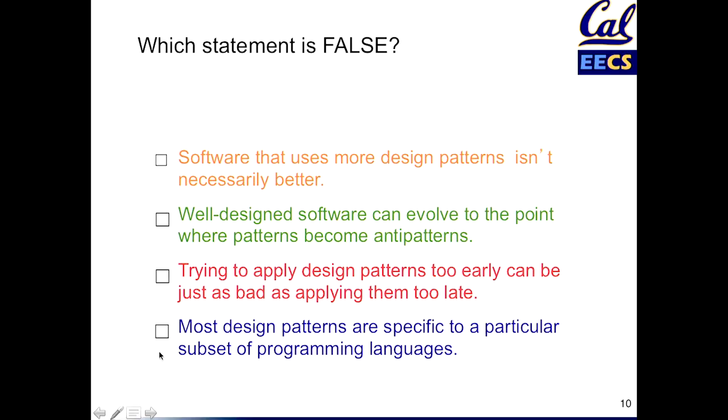So early generality is generally not good. And that leaves us with number four: most design patterns actually are not specific to a particular language. There are a few that are specific to certain language mechanisms, but by and large, design patterns talk about structure, and the kinds of things they capture are essentially language-independent. In fact, during most of these lectures about design patterns, we're not going to see a huge amount of code, but we'll see a lot of boxes and arrows. When you see boxes and arrows, it's a good sign that it doesn't depend on a programming language.